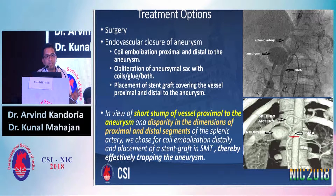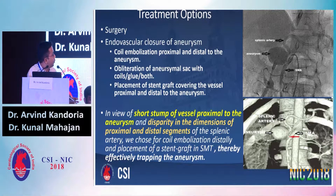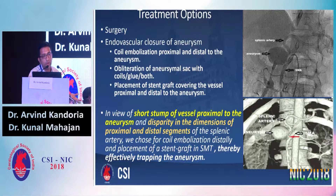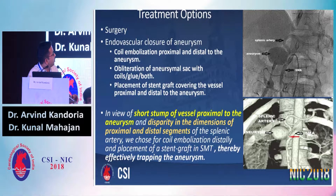Regarding treatment options, obviously the gold standard would be surgery. That was the first option which we gave to the patient, but we thought why not try an endovascular procedure. We had certain options in mind — we could coil embolize it proximally and distally, but the main problem was that the proximal stump was very, very narrow. Had we tried to embolize this, coils could have migrated or embolized into the distal SMA, further complicating the situation. Similarly, obliteration of the original sac with coils, glue, or both would have been detrimental. So we thought it would be better to distally embolize with coils and proximally place a covered stent graft across the SMA from where the splenic artery was originating.